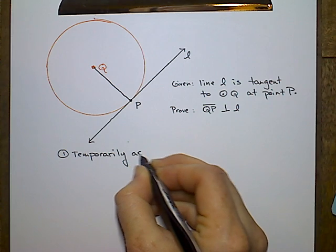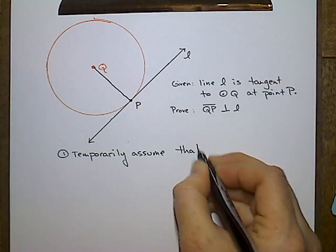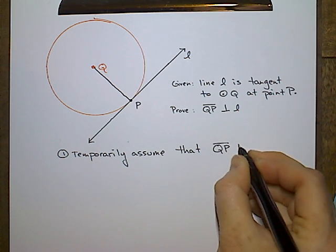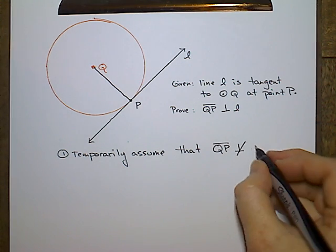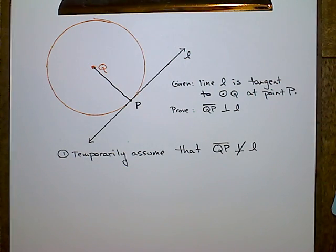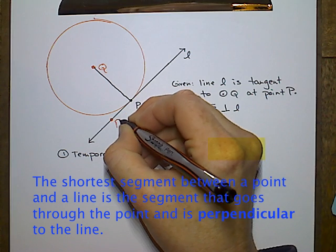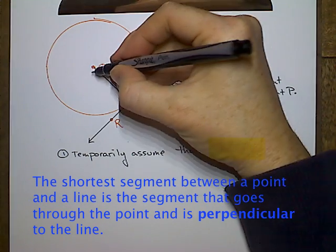So we're going to temporarily assume that QP is not perpendicular to line L. Now, remember, if you're trying to find the distance between a point and a line, the shortest distance is always the perpendicular distance.